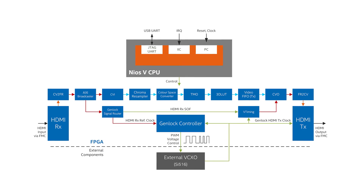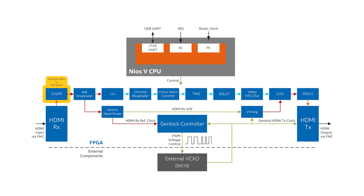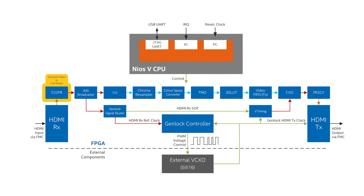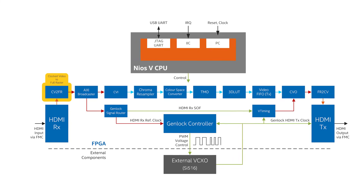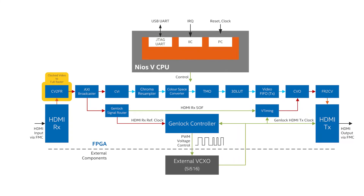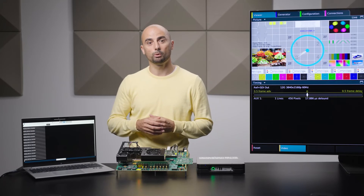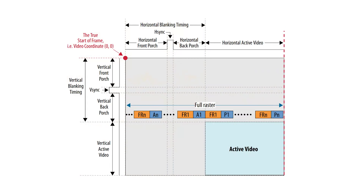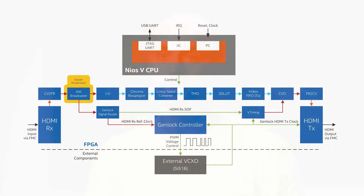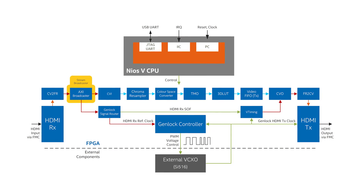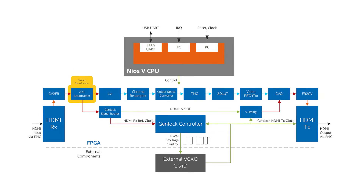In this example design, a clocked video to full raster converter IP converts from the clocked video format used by the HDMI RX IP to the Intel FPGA streaming video full raster protocol. The full raster variant of the protocol carries both active pixel data as well as timing information present in the blanking and active region of the video frame. The Axis Stream Broadcaster IP duplicates the full raster video stream and passes it on to both the video processing pipeline and the genlock signal router.